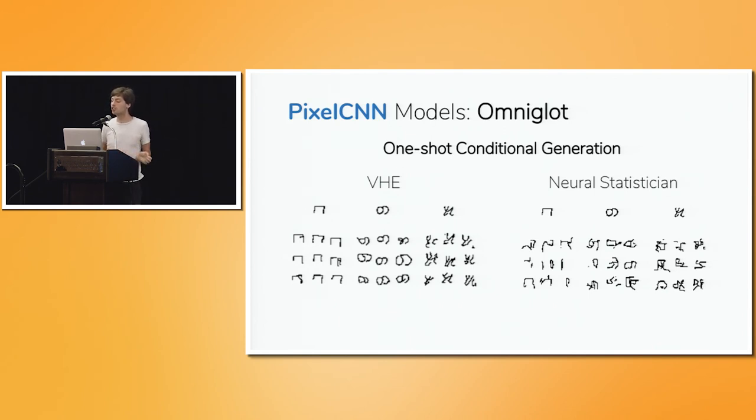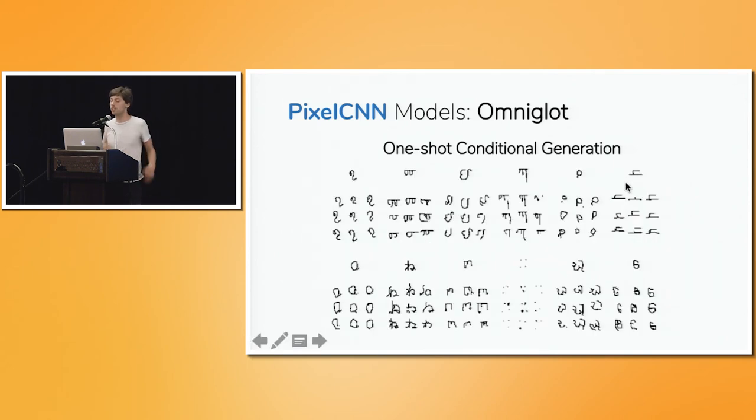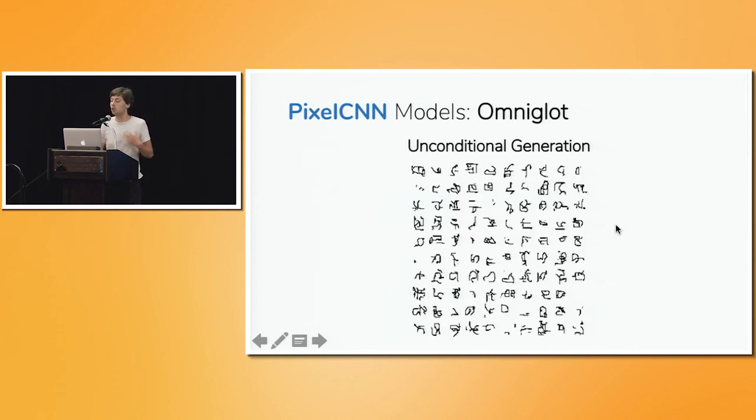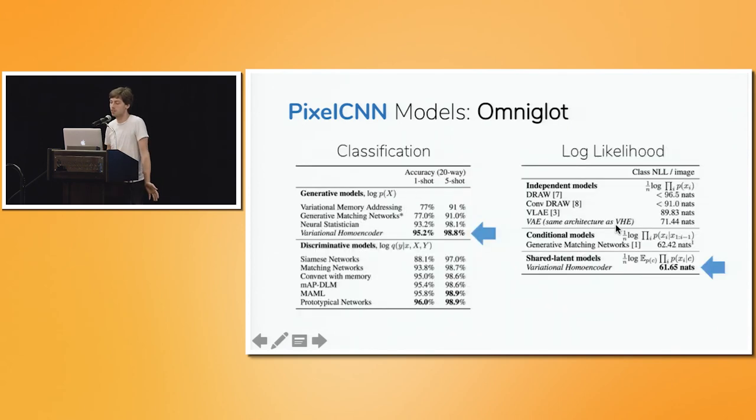And of course, we can also generate realistic looking images of newly imagined characters by sampling from our model unconditionally. In fact, it turns out that this generative model of Omniglot is state of the art for deep learning. It gets a one-shot and five-shot classification accuracy significantly higher than other deep generative models in the literature. And it's even competitive with the best discriminative models trained explicitly for classification. We also achieve state-of-the-art log likelihood results when taken together over all of the images in the dataset.